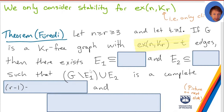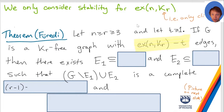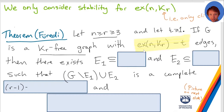This is a theorem of Furetti from around 2015. Versions of this were proven before, but this is a particularly nice statement which is quite new. Here we're dealing with a graph G which is K_r-free, the number of vertices is n with n ≥ r. Let's say the number of edges in G equals the extremal number minus t — where t is at least zero, so it includes the case t = 0.